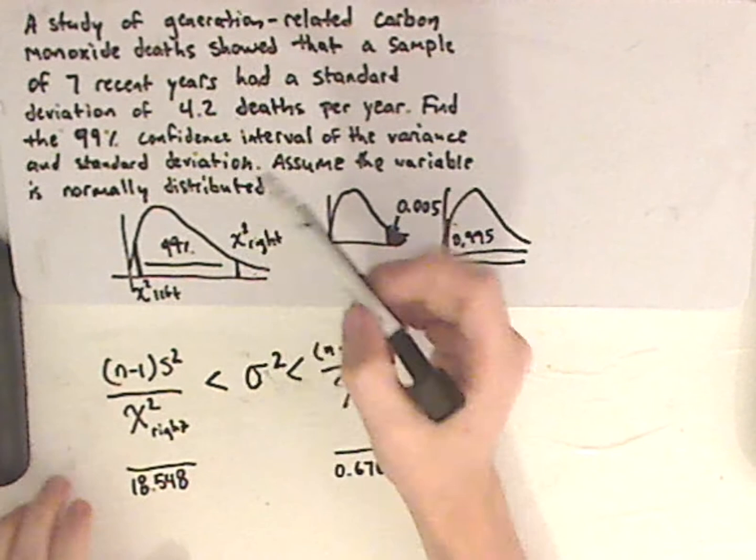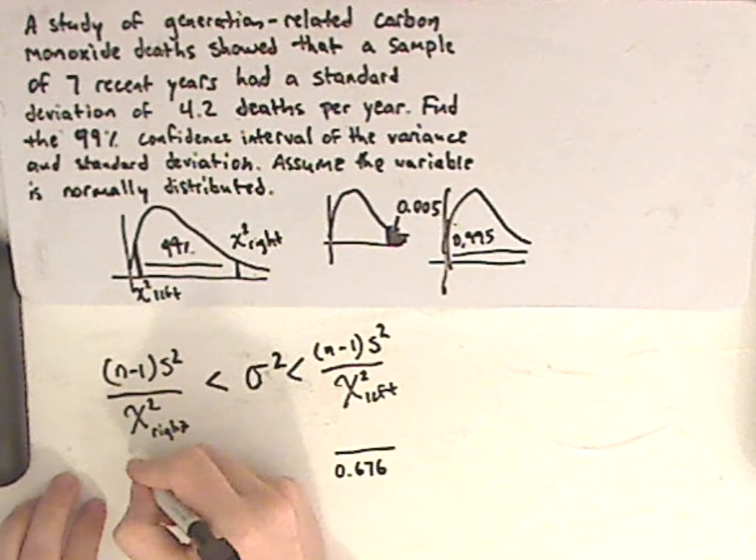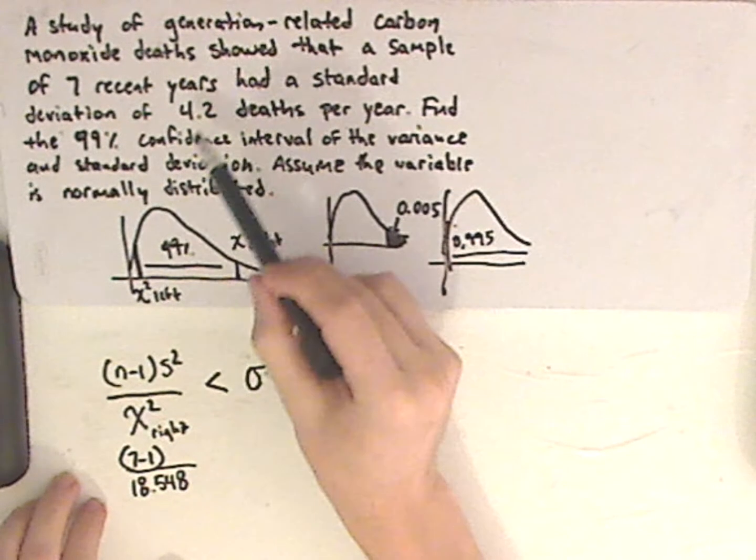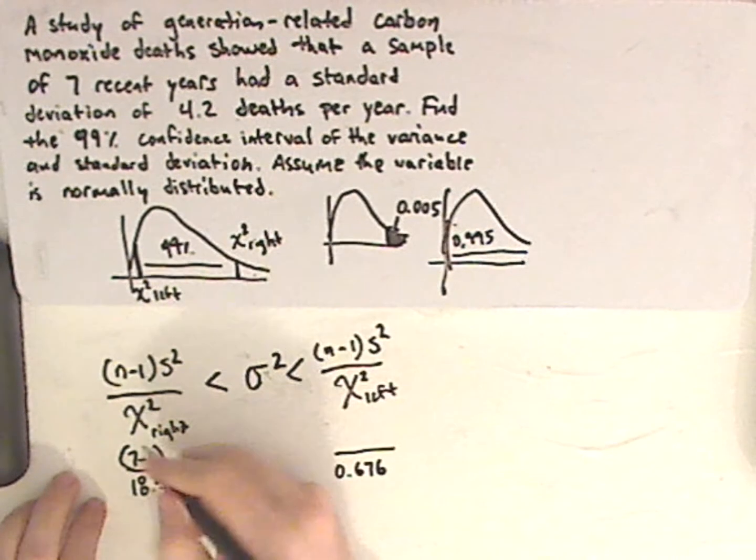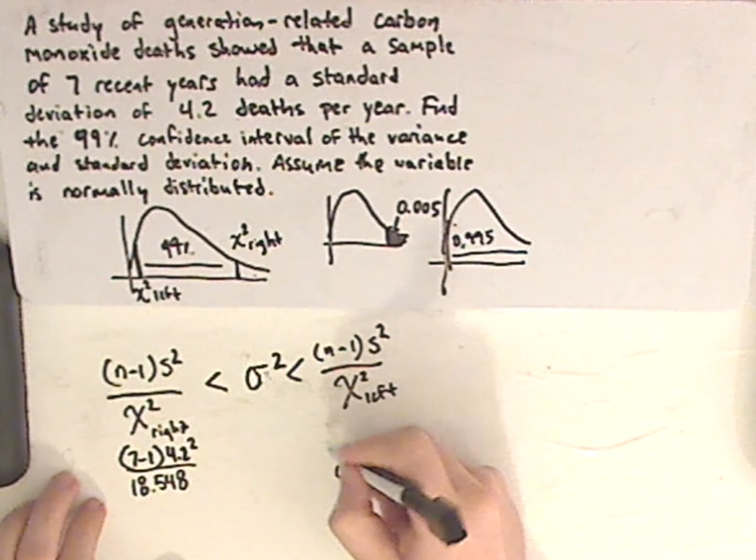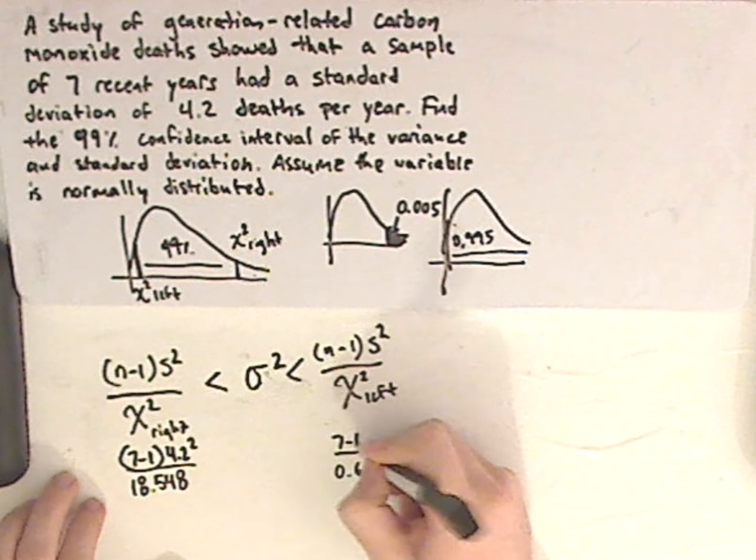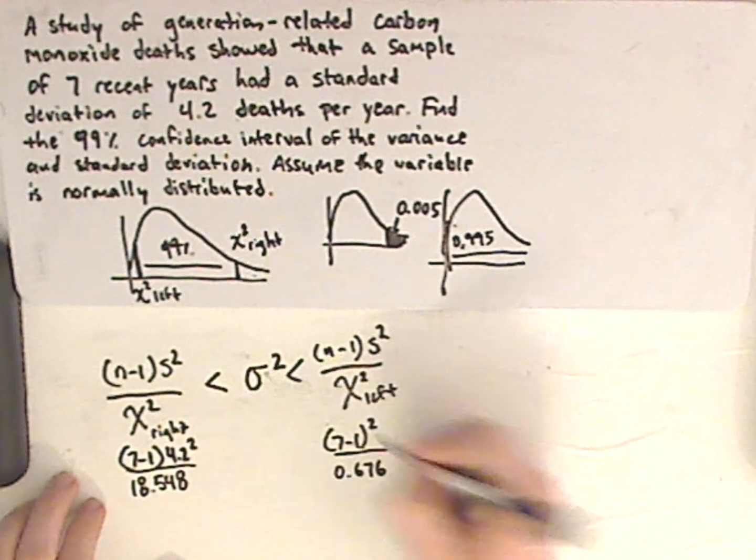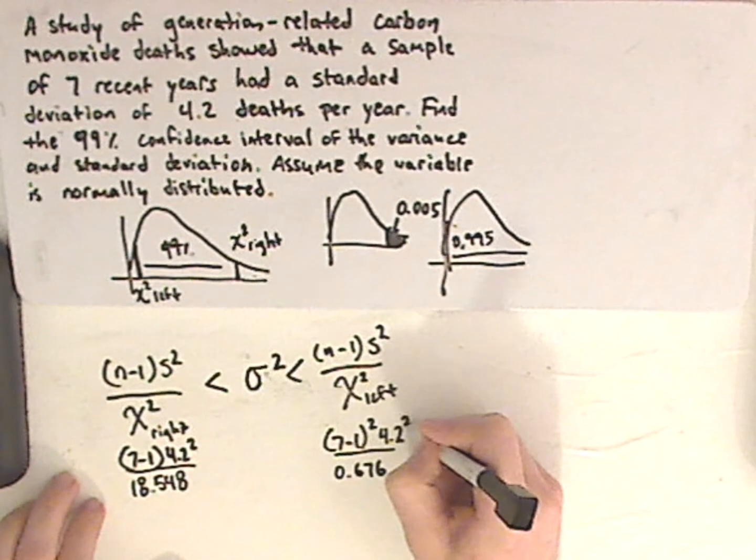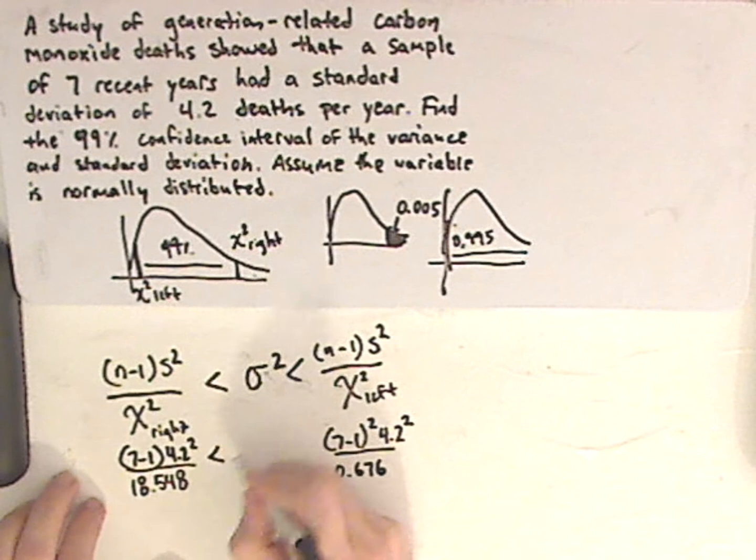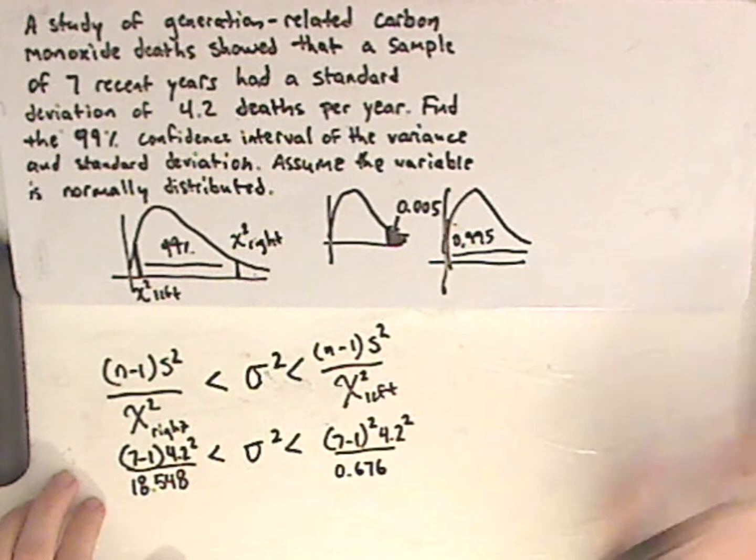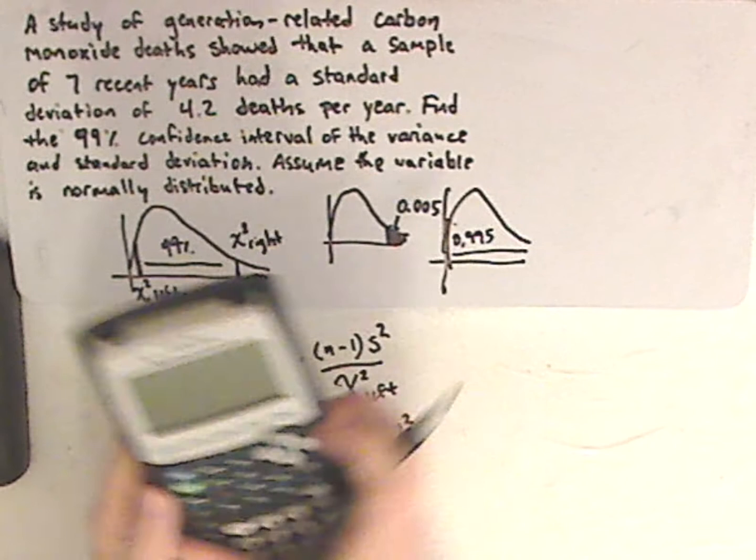And now I just plug everything in. So n is 7, so that's 7 minus 1. My s is 4.2, so that's 4.2 squared. And then over here, it's going to be 7 minus 1 squared, 4.2 squared. And this is going to be for variance.